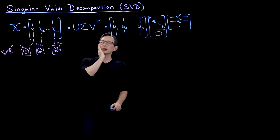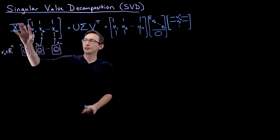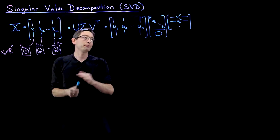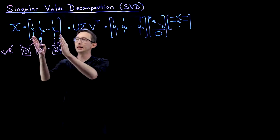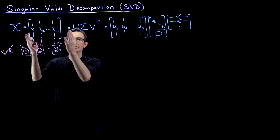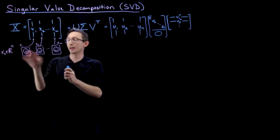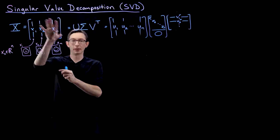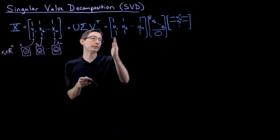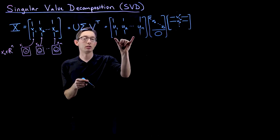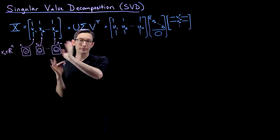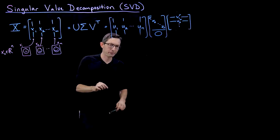Because this X matrix only has M columns, there are only M linearly independent columns in this N-dimensional vector space that could be spanned by these. So only the first M columns of U are important in representing this data.